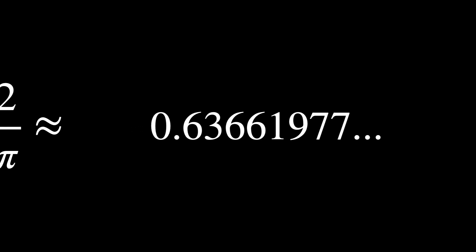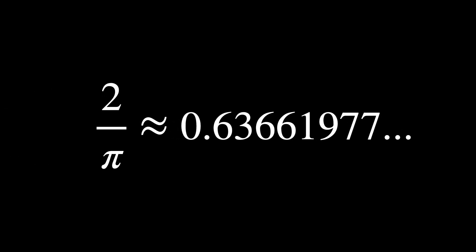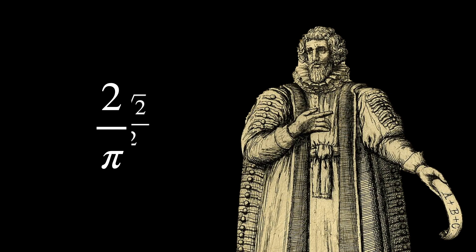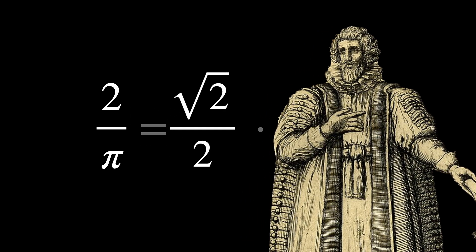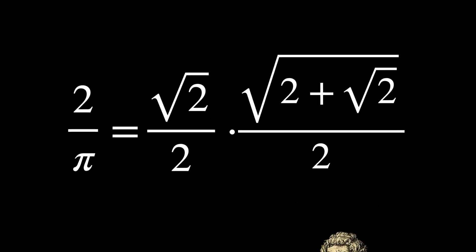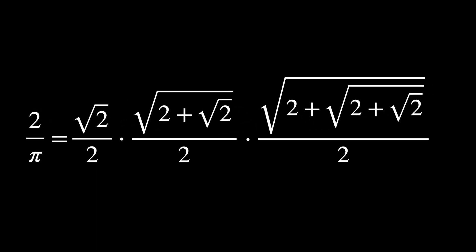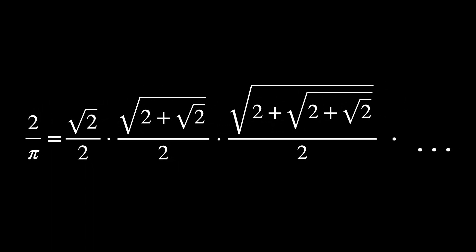After enough iterations, the result converges to 0.63661977 and so on. If we could keep multiplying terms infinitely, this would be exactly equal to 2 over π. This formula was discovered in 1593 by the French mathematician François Viète. It is a pretty shocking infinite product because it shows that π can be calculated just from the number 2 by a succession of additions, divisions, multiplications, and square roots.